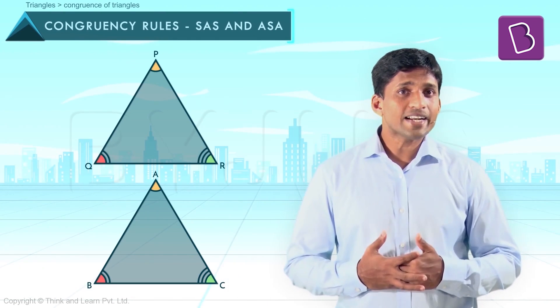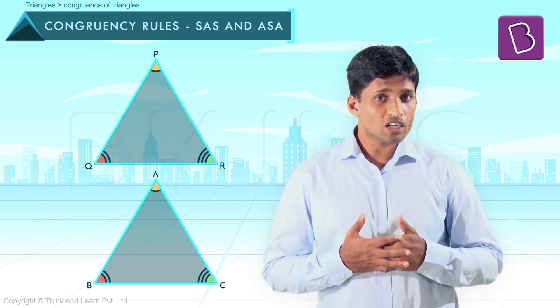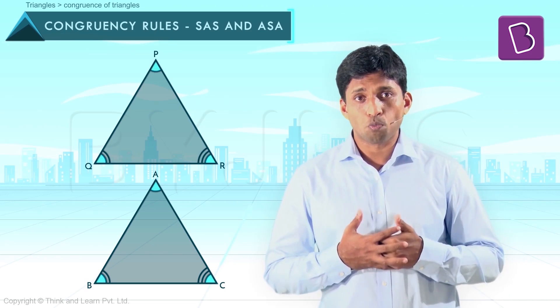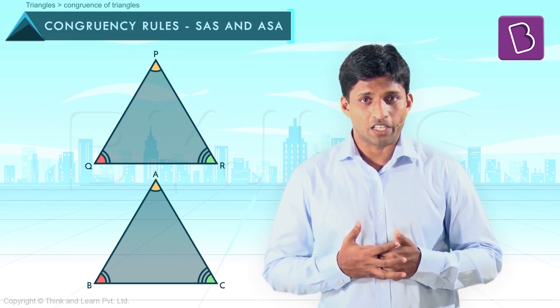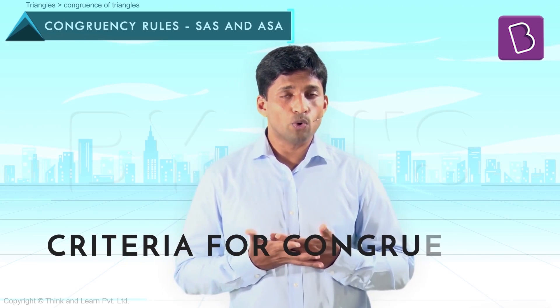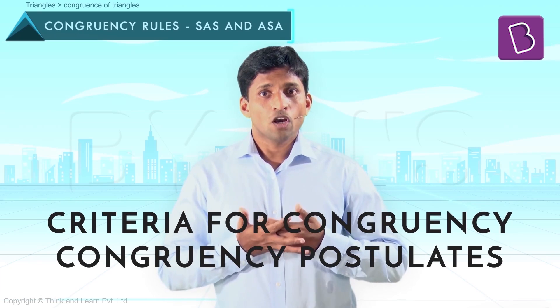Now we will discuss the criteria for congruency. It is not necessary to check for equality of all three corresponding sides and all three corresponding angles to prove congruency. Instead, to check whether the triangles are congruent, there are multiple shortcuts and we call them criteria for congruency or congruency postulates.